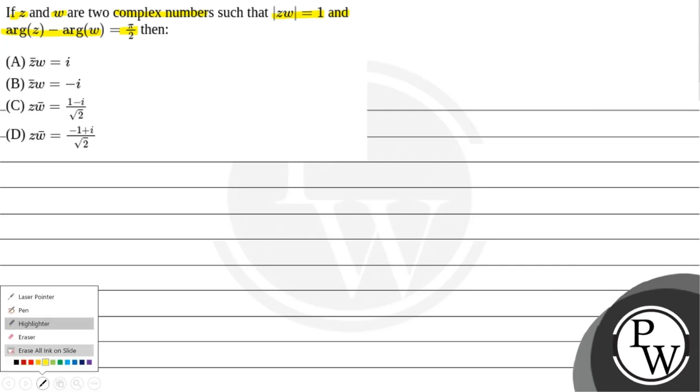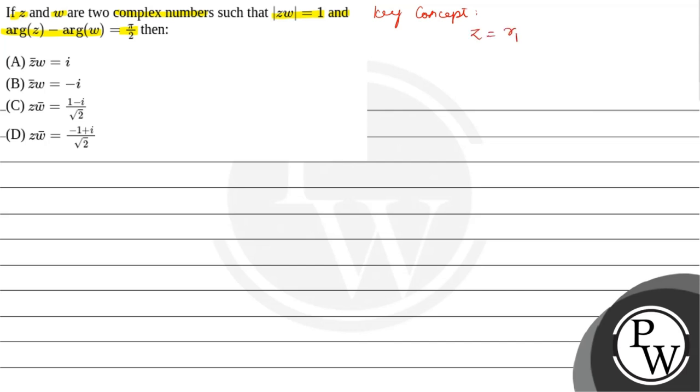For solving this question, the key concept here is let us take Z as R1 e power i theta and W as R2 e power i phi.